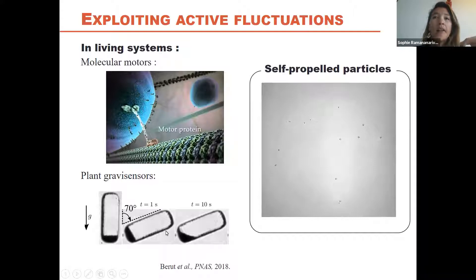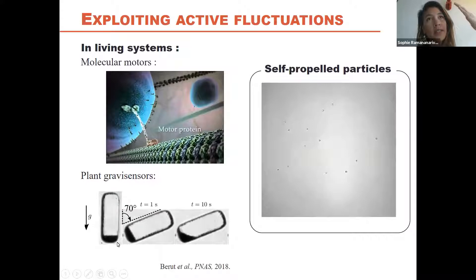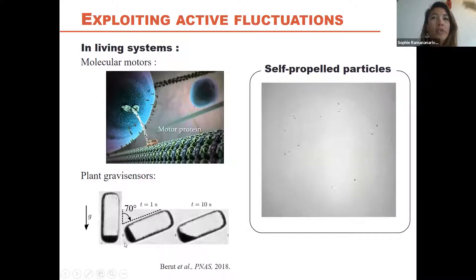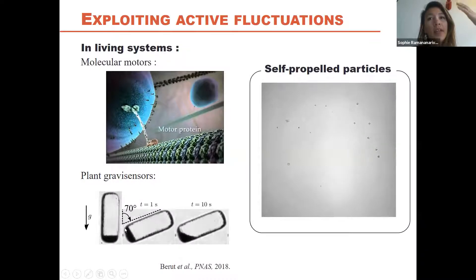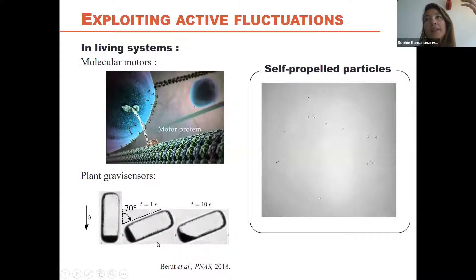Another nice example from a team in Marseille concerns gravity sensors in plants. It's a cell with a pile of grains that detects inclination when the pile avalanches. The shortcoming is you need to exceed a given angle for avalanche, giving poor accuracy. What they found is that living systems use active fluctuations within the cell so that avalanching starts at much smaller angles — a beautiful example of active fluctuations helping biological processes.